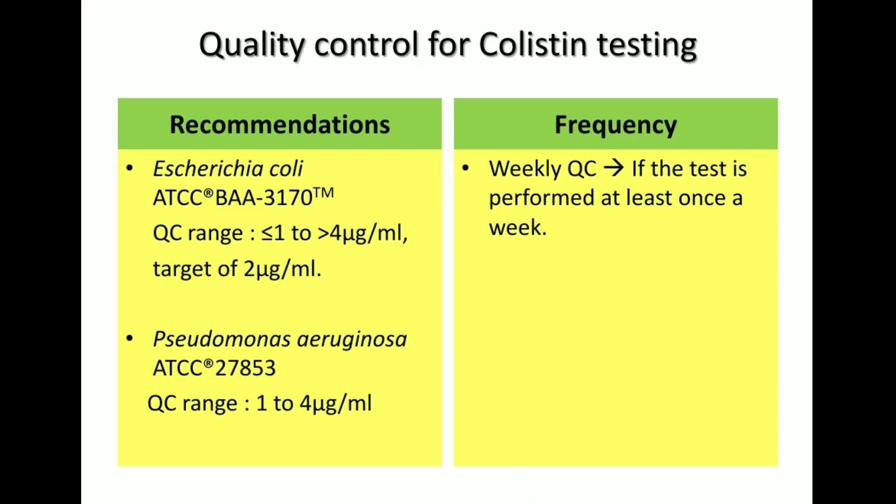Regarding quality control: the frequency of QC for colistin testing should be at least once a week, and more frequently if colistin testing is performed more often. The QC strains to be used are as mentioned, and the QC range should be between 1 to 4 microgram per ml, with a target MIC of 2 microgram per ml.